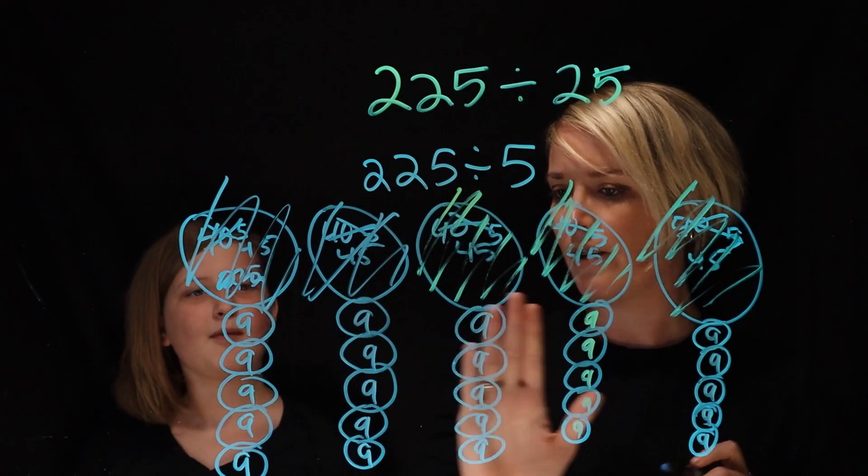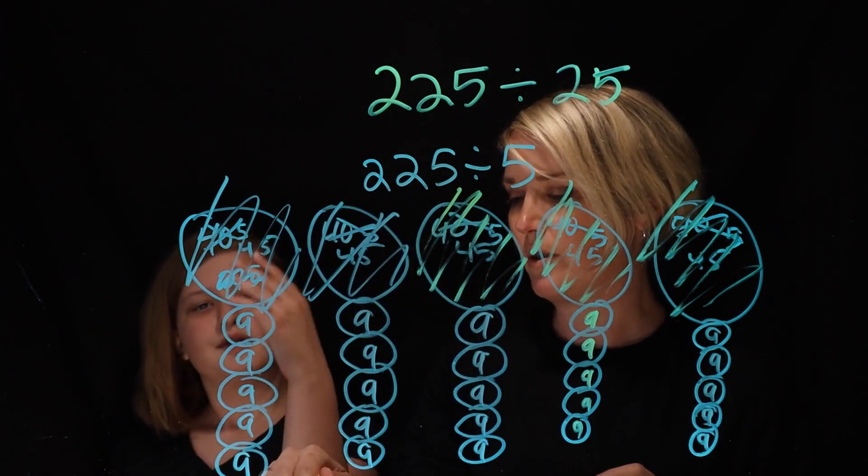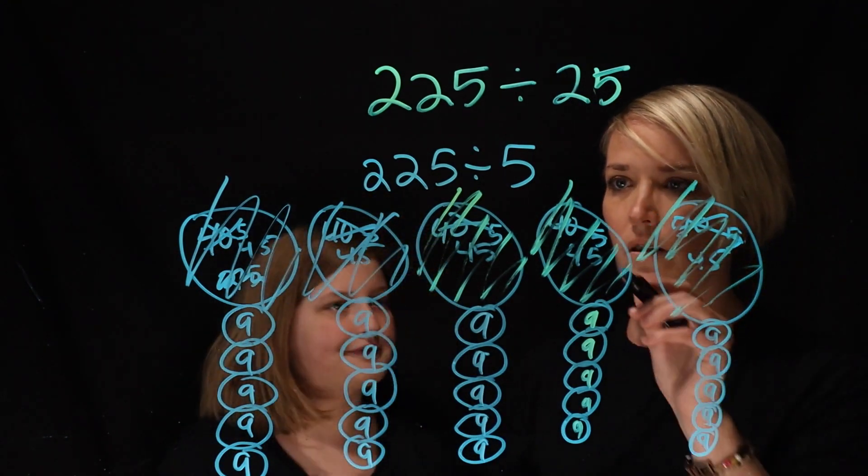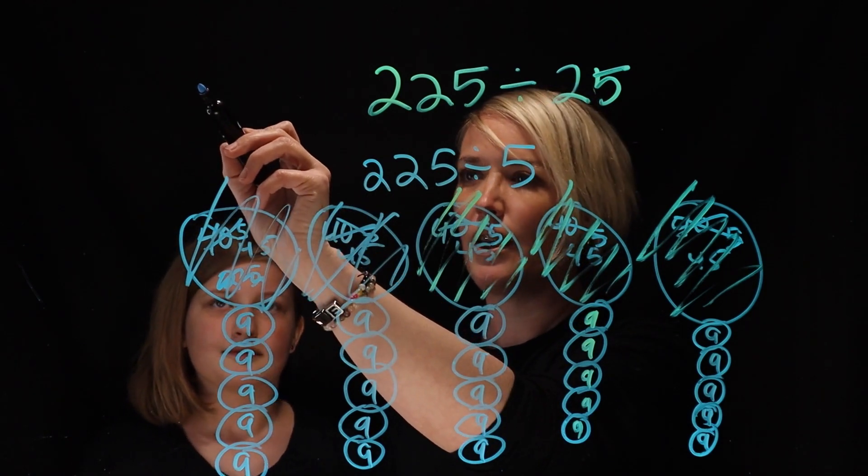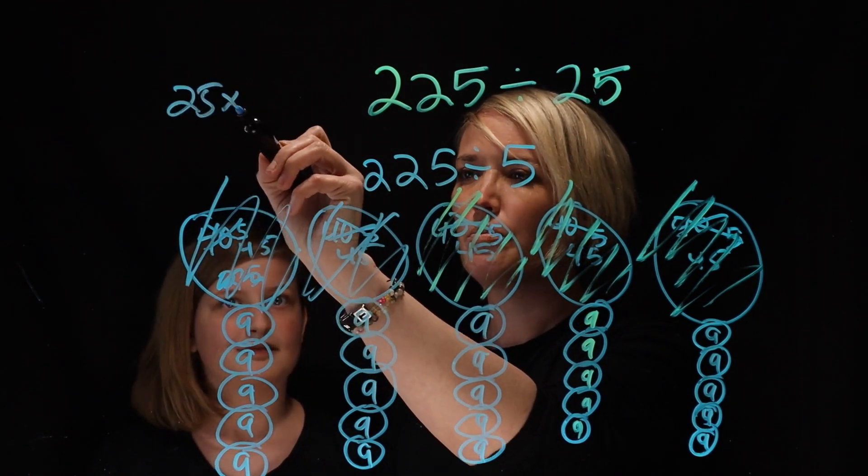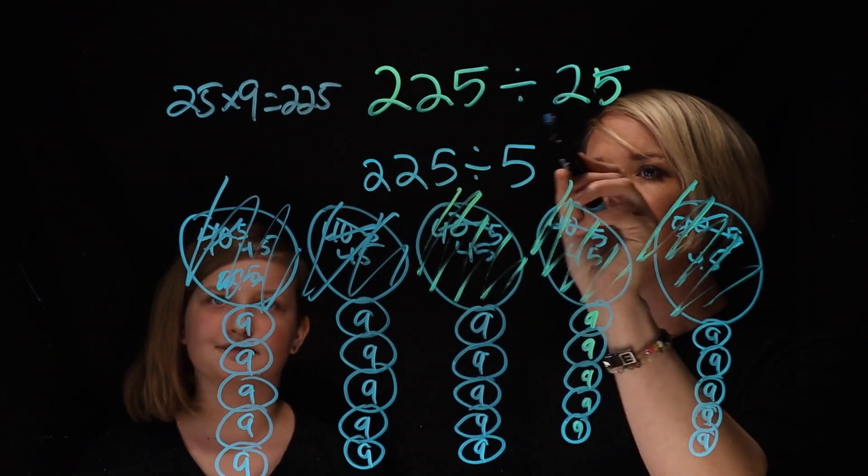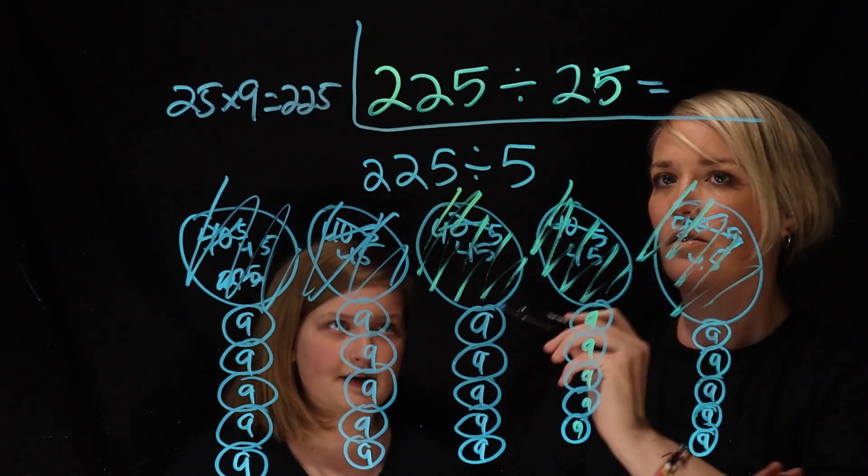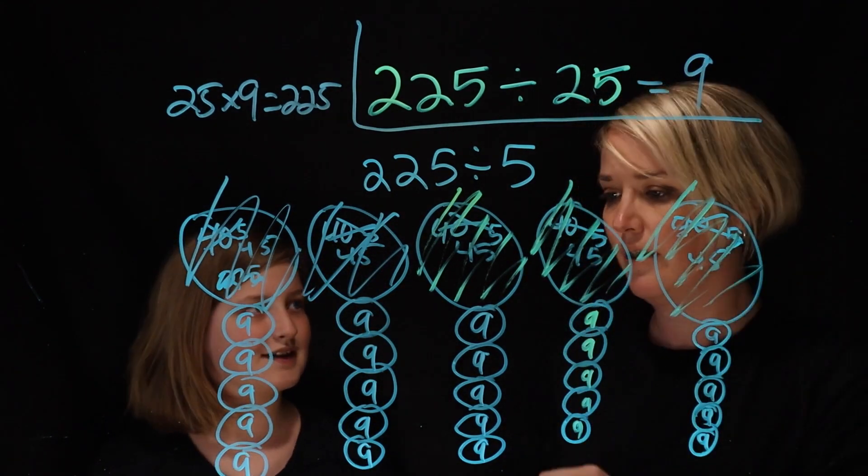Okay, and do we have 25 groups here? Mm-hmm. Yeah, because we had 5 groups originally, and we split those into 5 groups, so 5, 10, 15, 20, 25. Okay, so basically what you're telling me is 25 groups of 9 equals 225. Yes. So what's the answer to 225 divided by 25? That equals 9. 9. Great job there. Thanks. Bye, everyone.